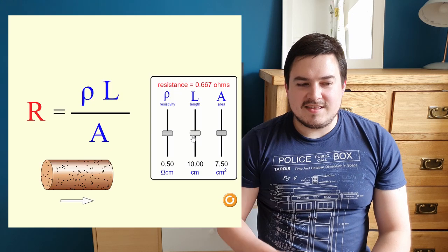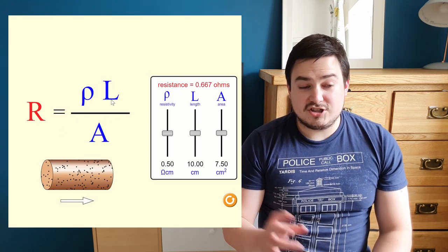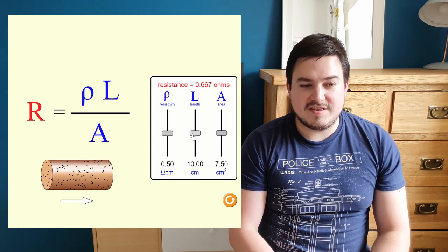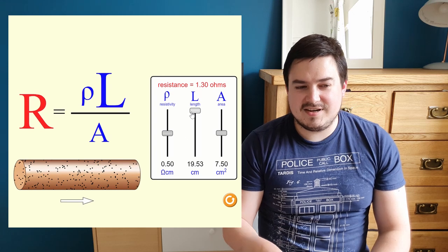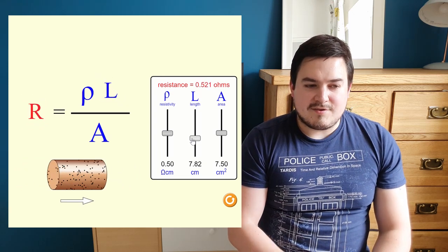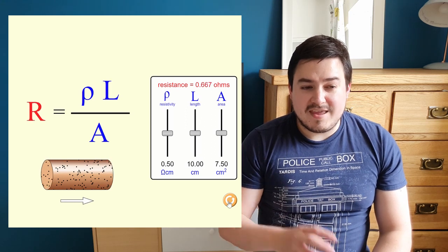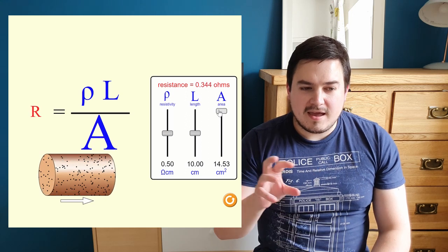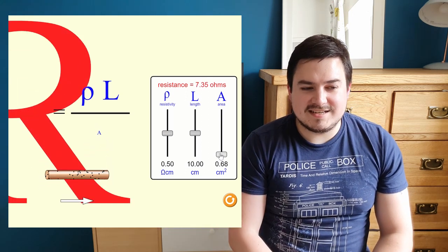As you can see, there's this equation with resistance shown as R. As I change the length — increasing the length — you can see the resistance gets bigger, and if I decrease the length the resistance gets smaller. For the area: if I increase the area you can see the resistance getting smaller, and if I decrease the area the resistance gets bigger.